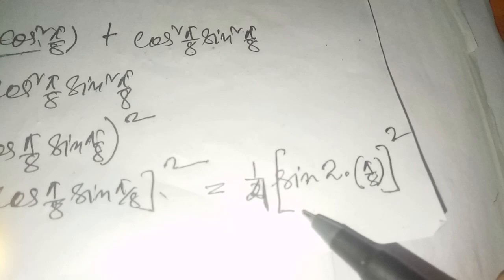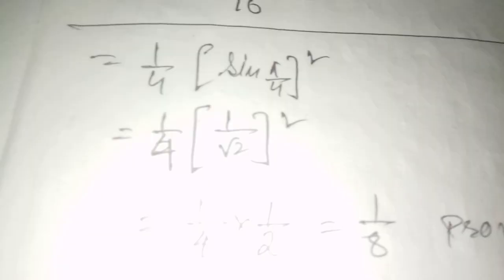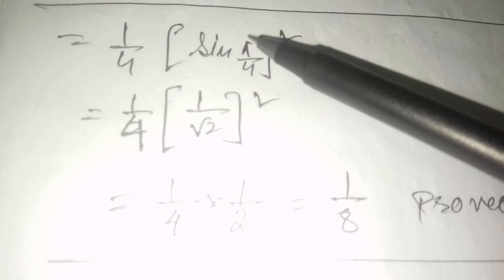So we have (1/4) sin²(π/4). Since sin(π/4) = 1/√2, we get (1/4) × (1/√2)² = (1/4) × (1/2) = 1/8. Hence proved.